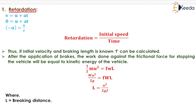For the retardation process, we use V = U + AT. Since final speed V = 0, retardation (−A) = U/T, which is initial speed divided by time. This gives the value of retardation and is very important from the GATE examination point of view.